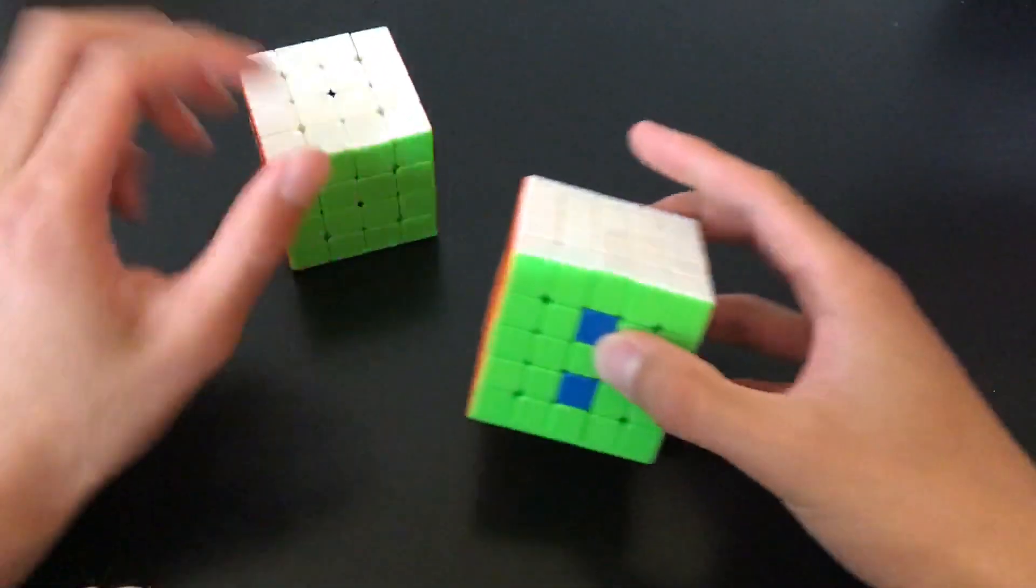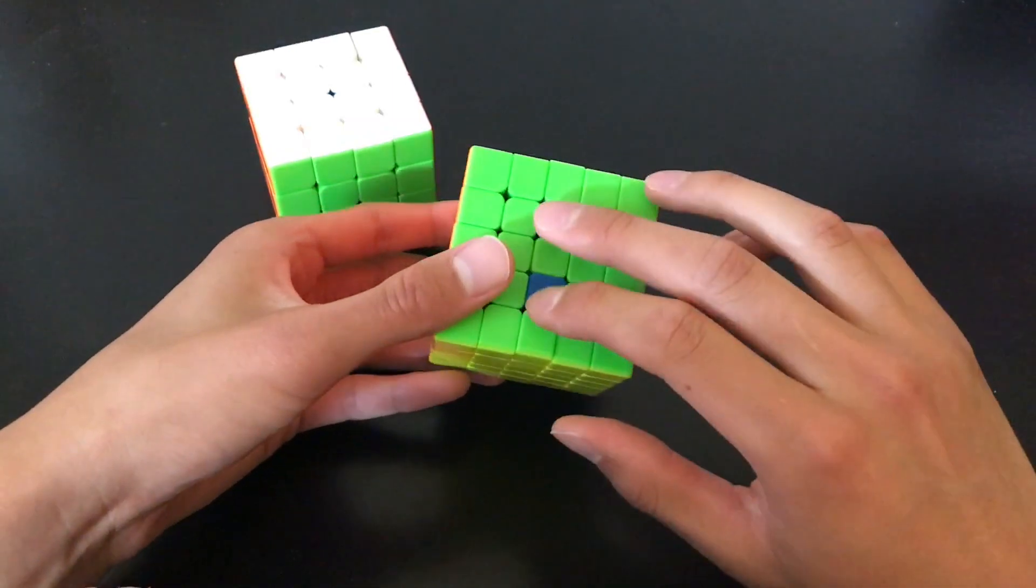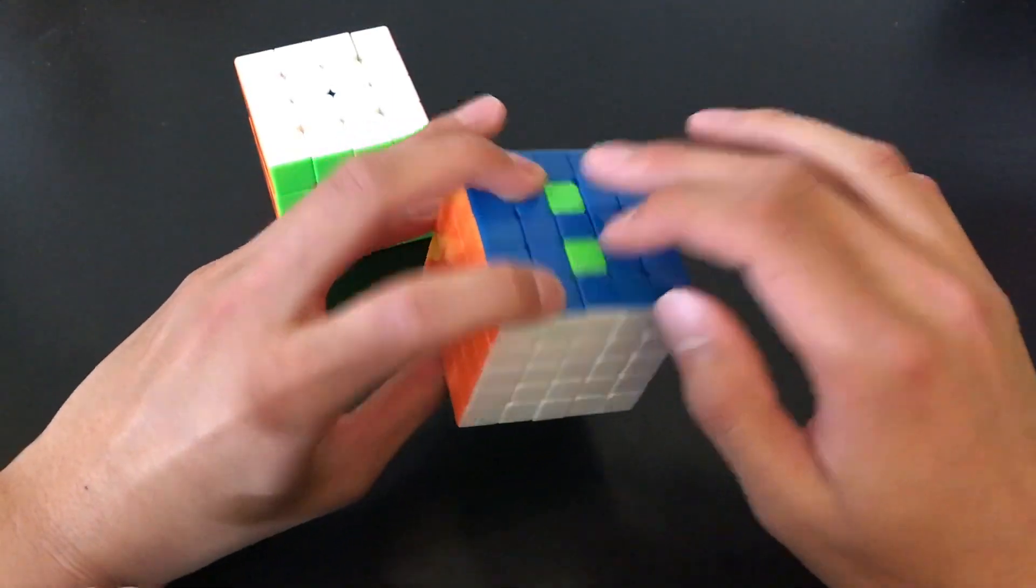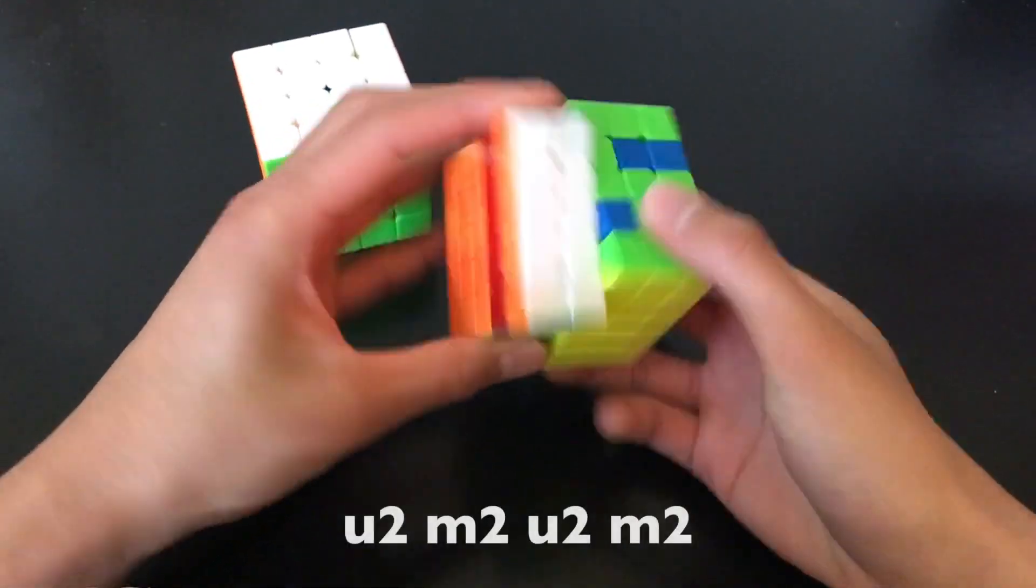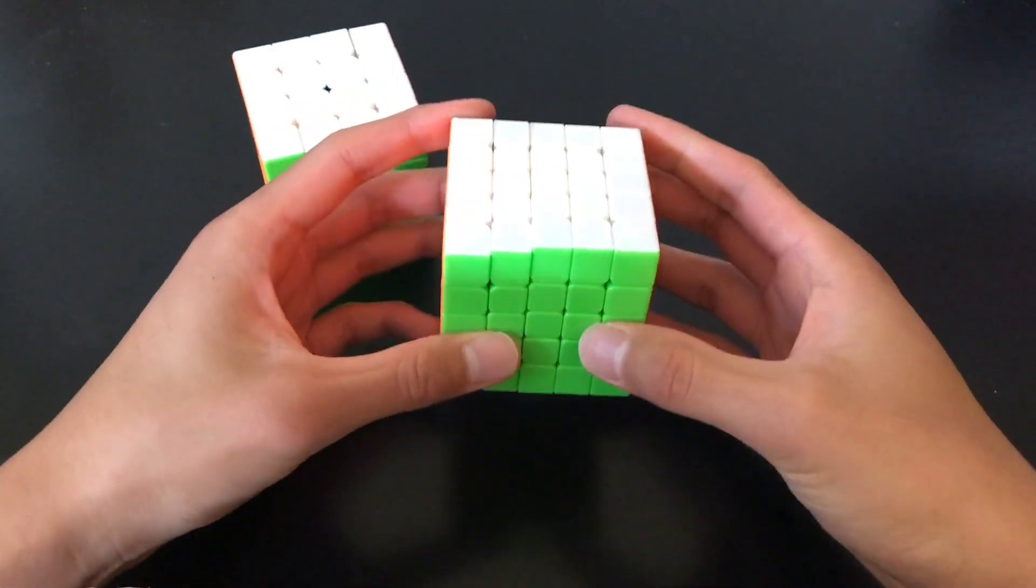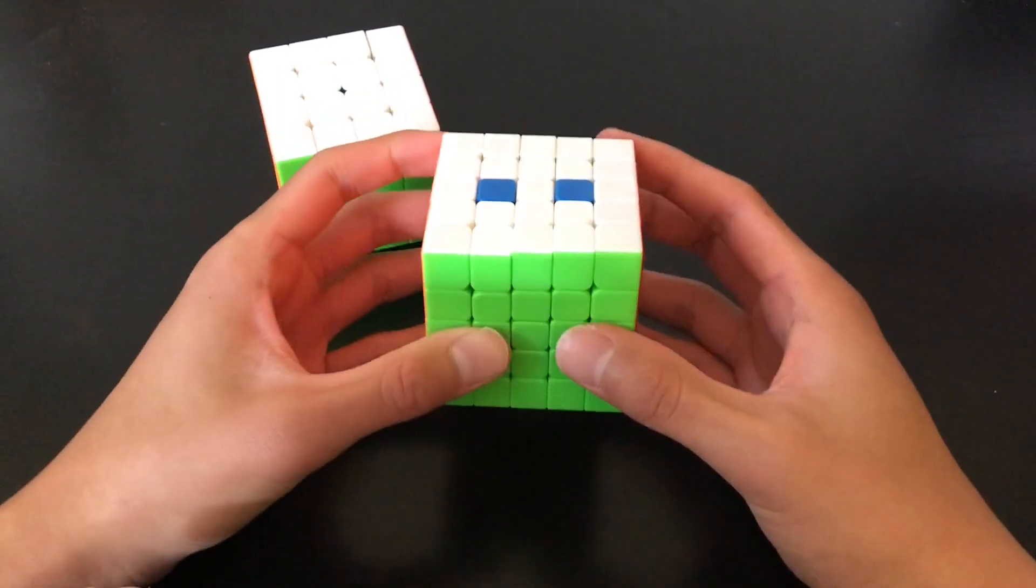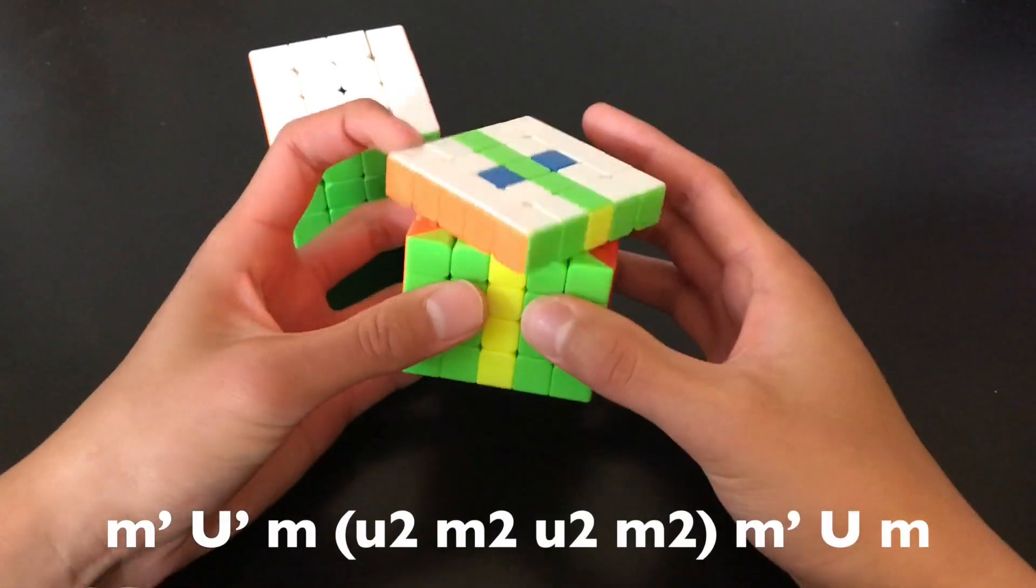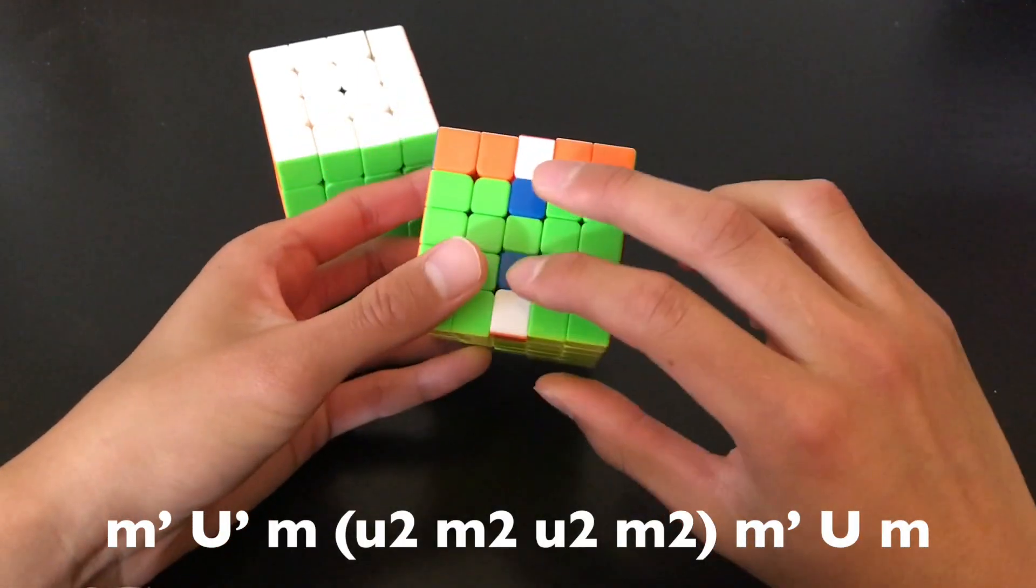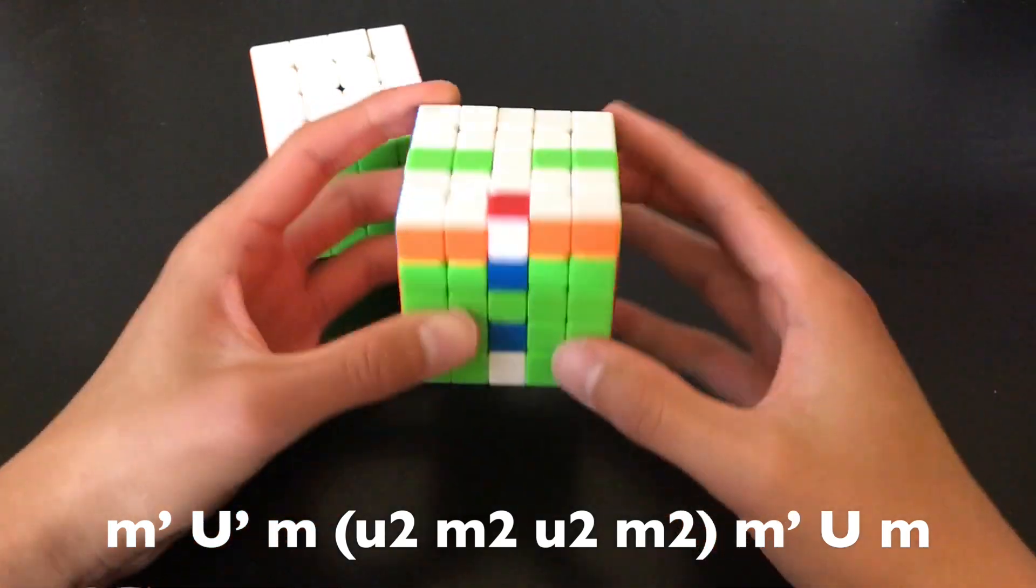You can also do similar things for plus centers on a 5x5. Let's say you need to swap these two centers with these two. You can do U2 M2 U2 M2. You can also do three-move setups to swap adjacent bars. For example, M prime U prime M sets up these two centers in the right position to be swapped.